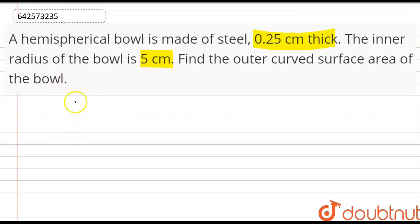So we are given that the inner radius, denoted as small r, is 5 cm, and the thickness is 0.25 cm.